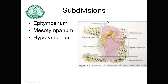The tympanic cavity is further divided into the epitympanum, mesotympanum, and hypotympanum. The epitympanum lies above the tympanic membrane and contains the head of the malleus and the body and short process of the incus. The mesotympanum lies opposite the tympanic membrane — it is the narrowest part — and contains the handle of the malleus, the long process of the incus, and the stapes. The hypotympanum lies below the tympanic membrane.